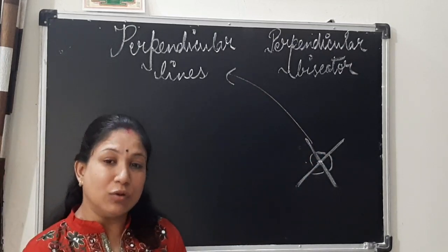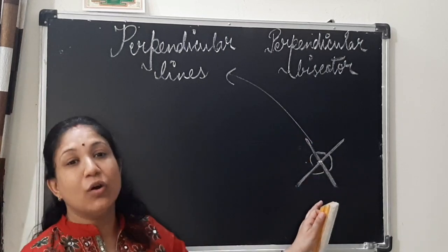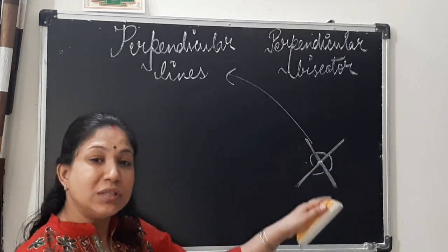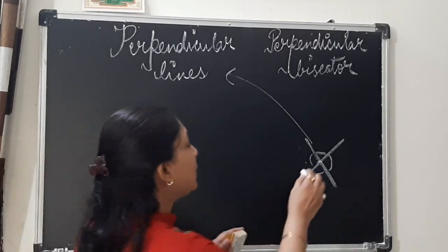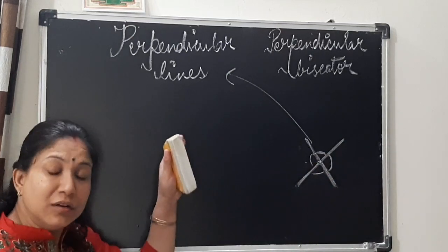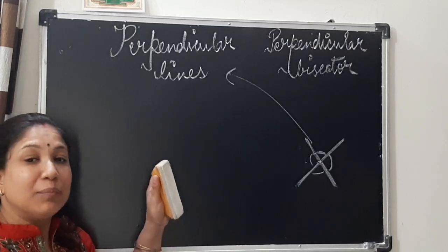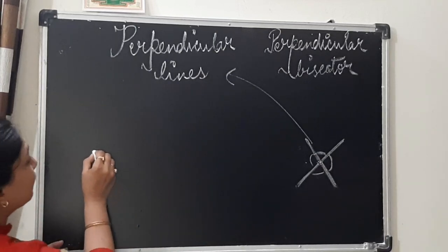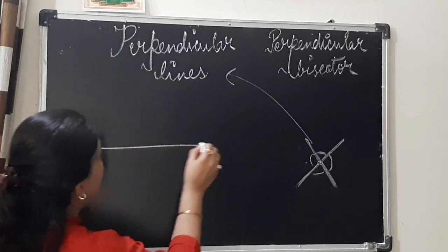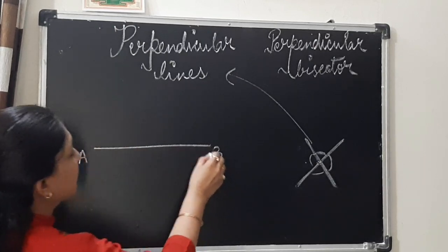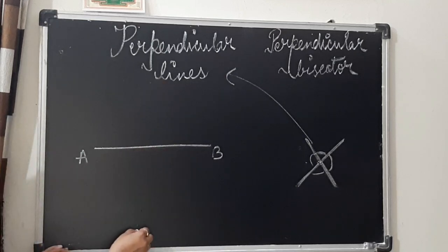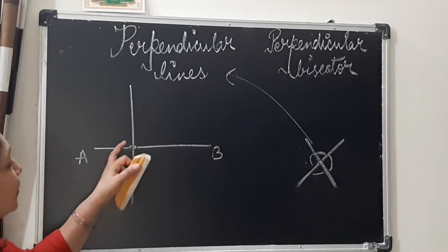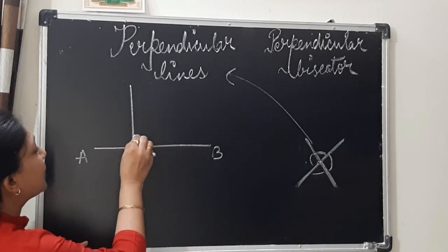In perpendicular lines also, you have part of the definition of intersecting lines — that is, the two lines will meet each other or cross each other at a point. But here, angles will be formed at right angle. For example, this is line segment AB, and if I drop a perpendicular line at a point, the angle formed is a right angle.